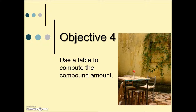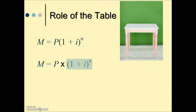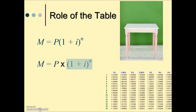Calculating compound interest using a table. Here we have our formula for calculating compound interest. The maturity value is equal to the principal times the quantity 1 plus i, which is the interest rate per compounding period, raised to n, the number of compounding periods. We can take the portion being multiplied by the principal and, because those same interest rates and compounding periods tend to repeat, we can generate a table — so instead of calculating this each time, we can look those values up.